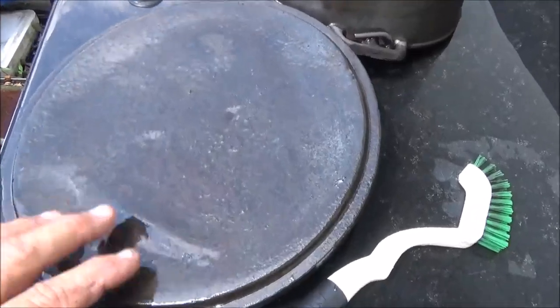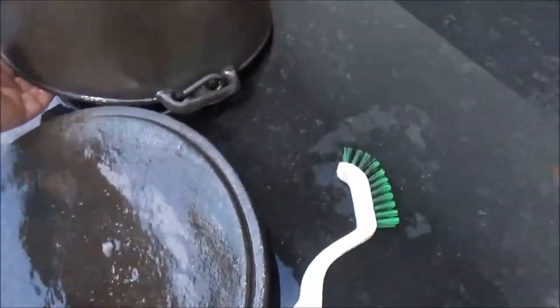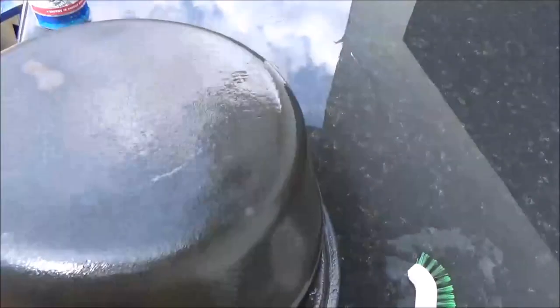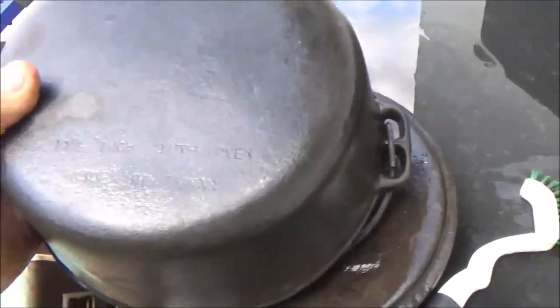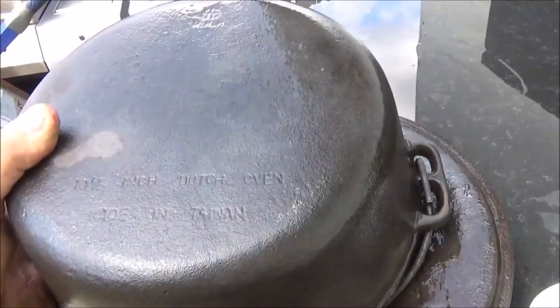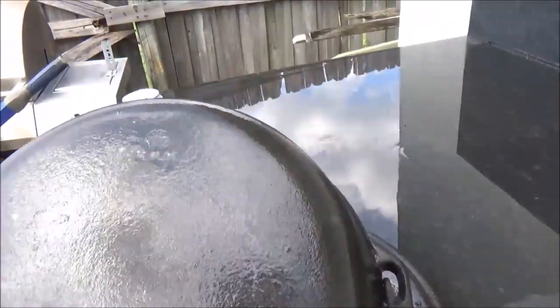I mean, 17 or 1800s, not century. But the pot now that we've cleaned it up, you can see the stamp on the bottom. This is a 10 and a half inch Dutch oven made in Taiwan. It's probably still pretty old.